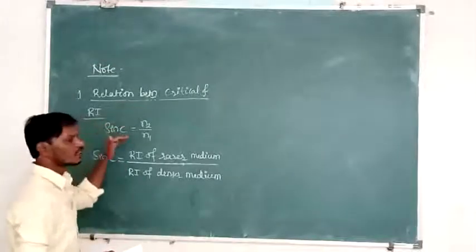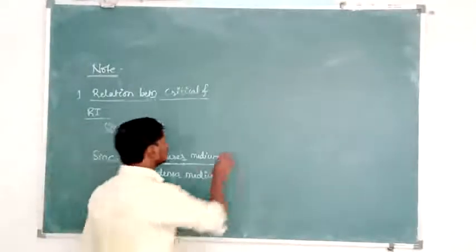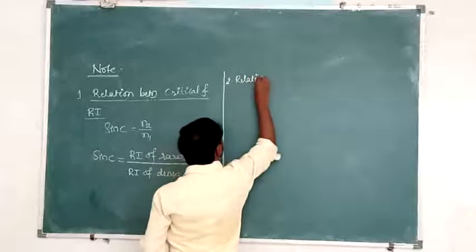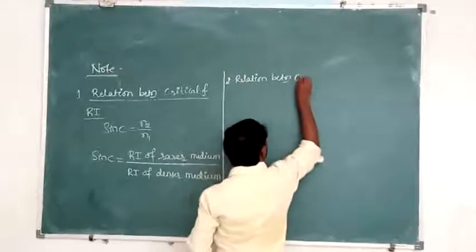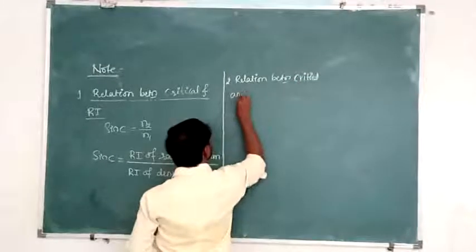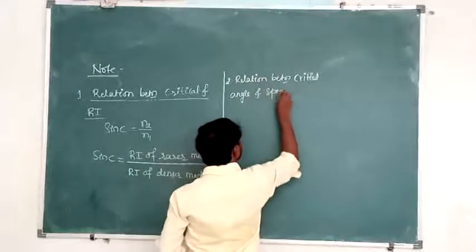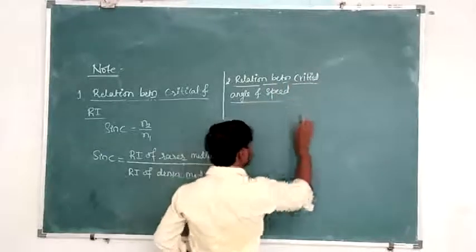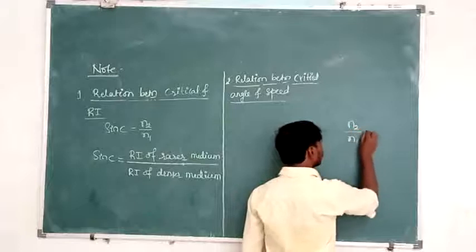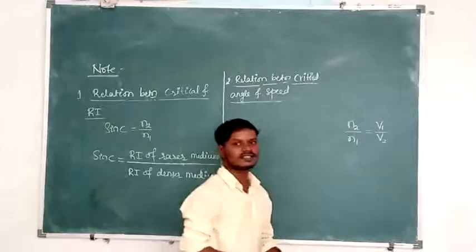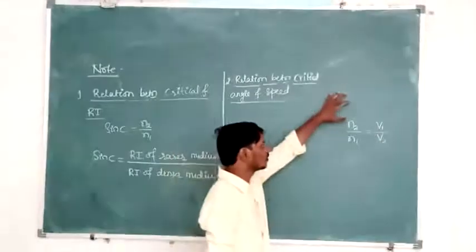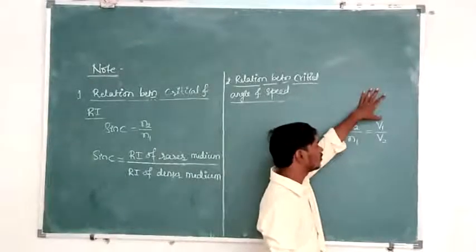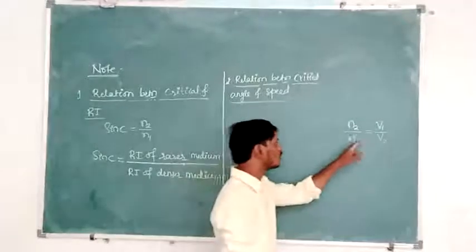The next relation: what is the relation between critical angle and the speed of light in both media? Already we know that n2 by n1 is equal to V1 by V2, because the refractive index and the speed of light are inversely related.